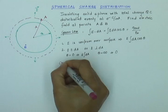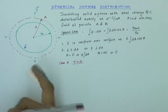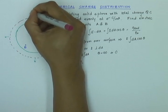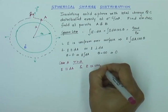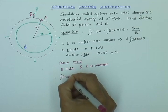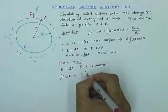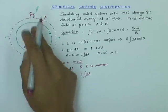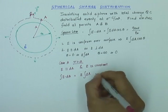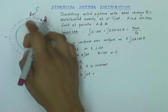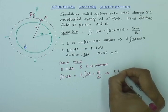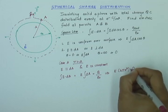So for Case A, where r is greater than the radius of the original sphere, I get two things: E is parallel to dA at each point because dA for the sphere is also radial, and E is constant over the surface. Applying Gauss's law, the integral E dot dA simplifies to E times the integral of dA, which is just the surface area of the sphere. The Gaussian sphere encloses the entire original sphere, so Q enclosed equals the total charge Q. This gives E times 4πr² equals Q over epsilon zero.